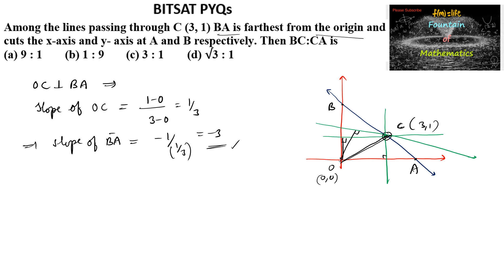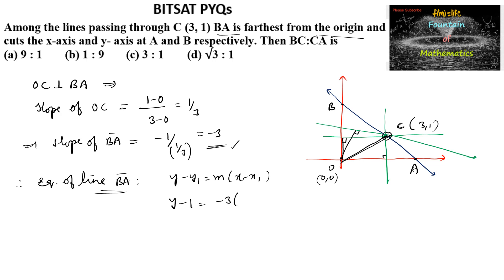So the slope of Ba can be taken as −3, and it passes through the point (3,1). The equation of line Ba is y − y₁ = m(x − x₁), so y − 1 = −3(x − 3). Expanding: y − 1 = −3x + 9, which gives us 3x + y − 10 = 0.